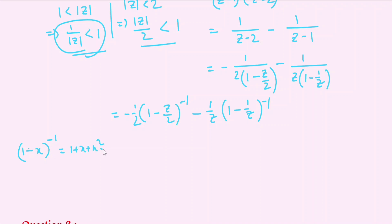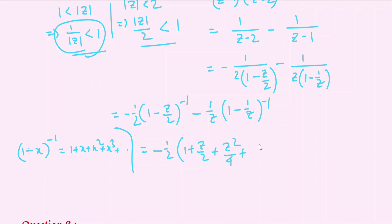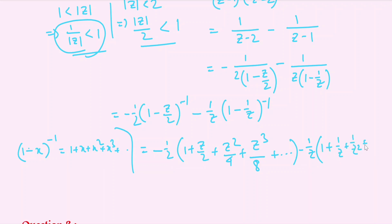Using this expansion, the expression becomes: −(1/2)(1 + z/2 + z²/4 + z³/8 + ...) minus (1/z)(1 + 1/z + 1/z² + ...). This gives us two series. We now need to find the coefficient of z³.